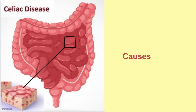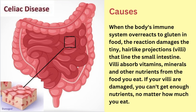Now let us see the causes for this condition. When the body's immune system overreacts to gluten in the food, the reaction damages the tiny hair-like projections called villi that line the small intestine. Villi absorb vitamins, minerals and other nutrients from the food you eat. If your villi are damaged, you can't get enough nutrients no matter how much you eat.